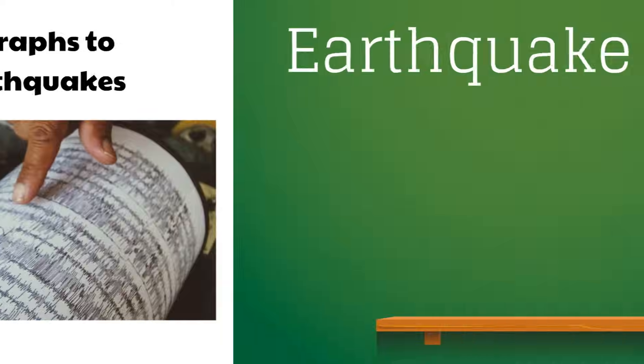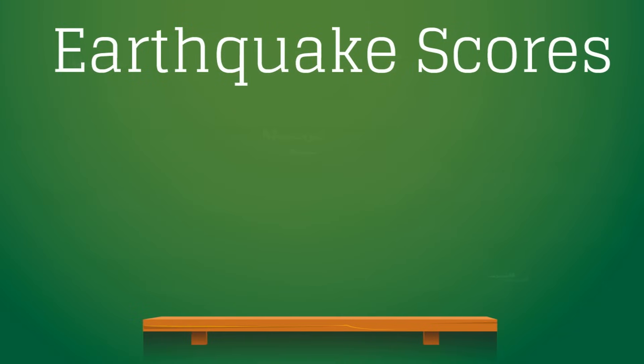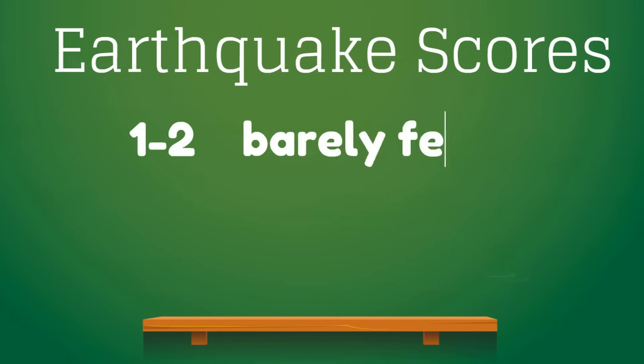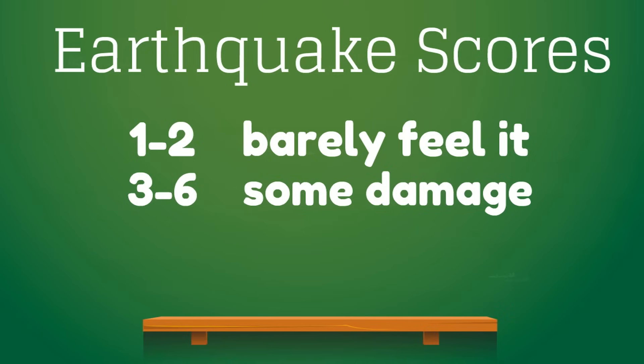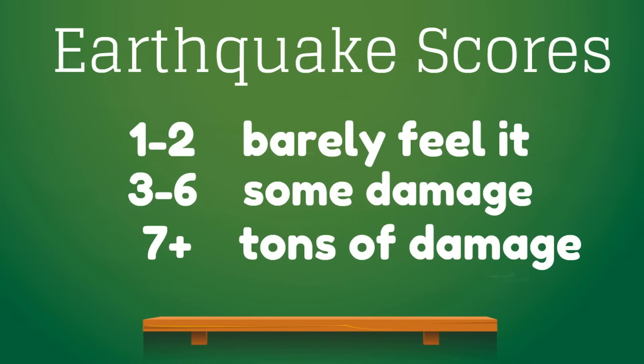Here are some common earthquake scores. A 1 or a 2 earthquake, you barely feel it. The 3 to 6 range of earthquakes, there's going to be some damage. But 7 or higher for an earthquake score — that's a massive earthquake, and there's going to be tons of damage.